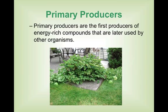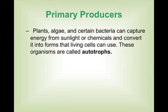Primary producers are the first producers of energy-rich compounds that are later used by other organisms. Primary producers in this picture are the grass and the watermelon plant. This organism makes all of its energy from the sun through a process called photosynthesis — it is capable of creating sugars. Plants, algae, and certain bacteria can capture energy from sunlight or chemicals to convert it into forms that living cells can use. These organisms are called autotrophs. The terms primary producer and autotroph are interchangeable.